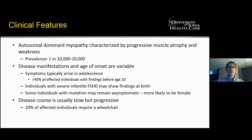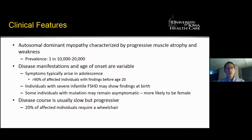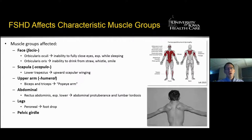The clinical features of FSHD include that this is an autosomal dominant myopathy characterized by progressive muscle atrophy and weakness. Prevalence is about 1 in 10,000 to 20,000. The disease manifestations and age of onset are variable depending on the mutation. Symptoms typically arise in adolescence, with over 90% of individuals being affected before the age of 20. The disease course is progressive, with 20% of affected individuals requiring a wheelchair.